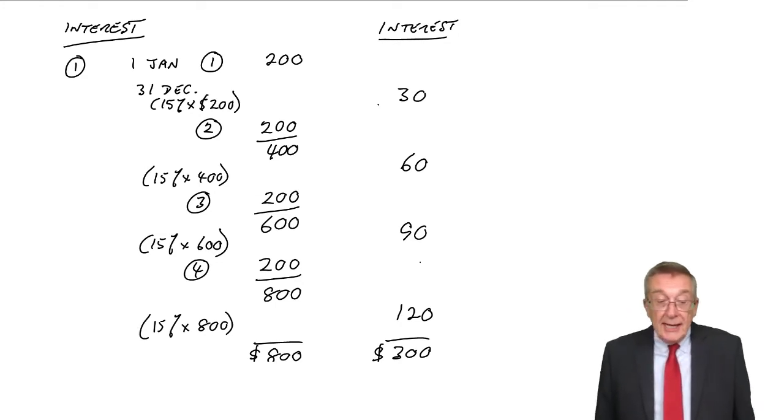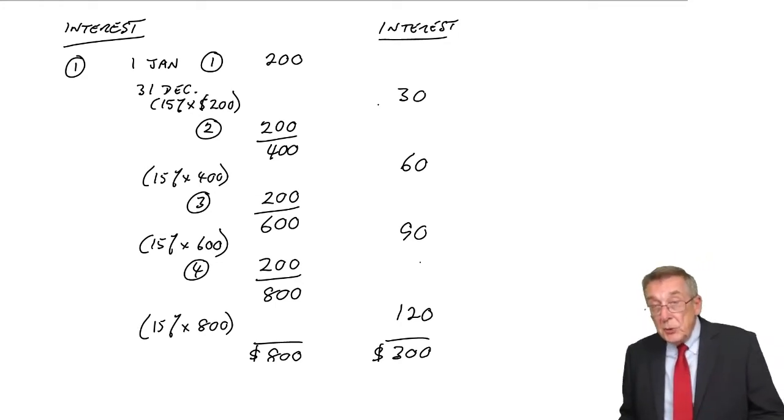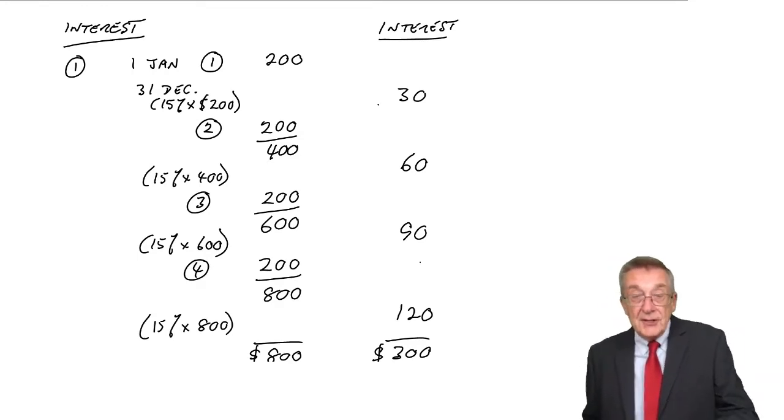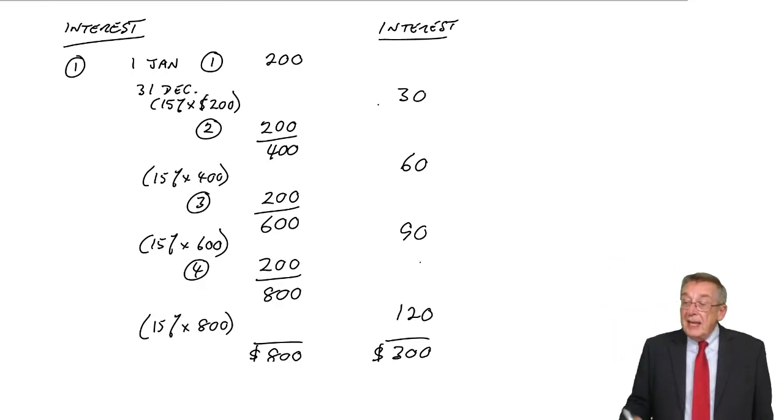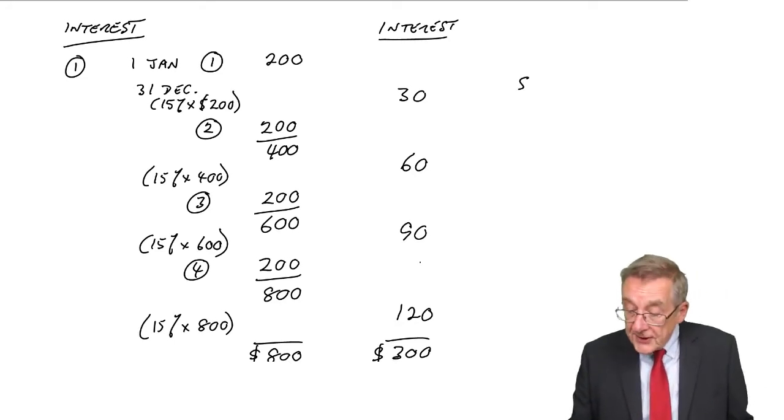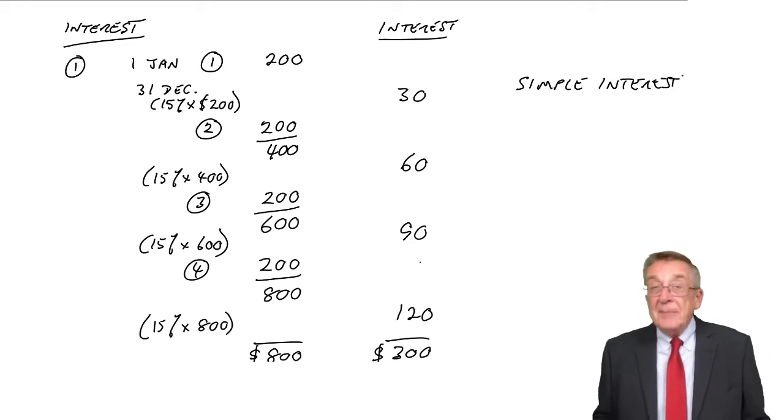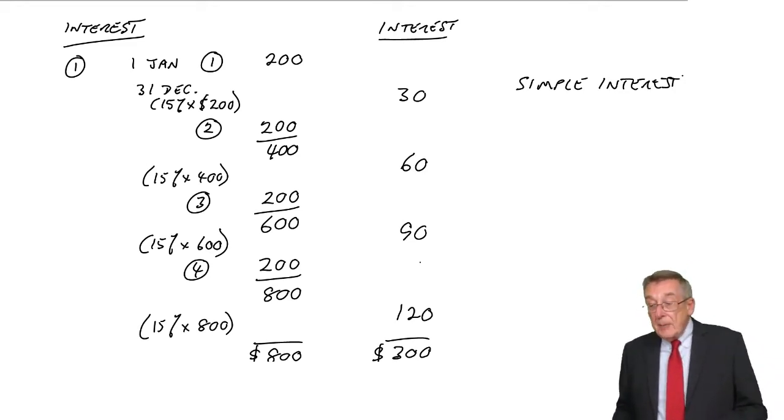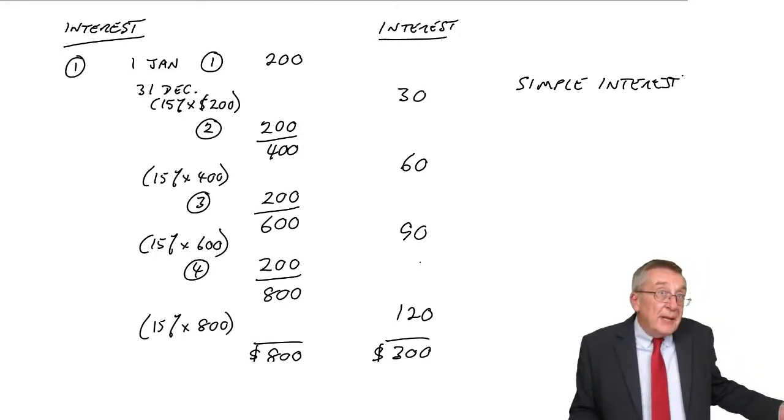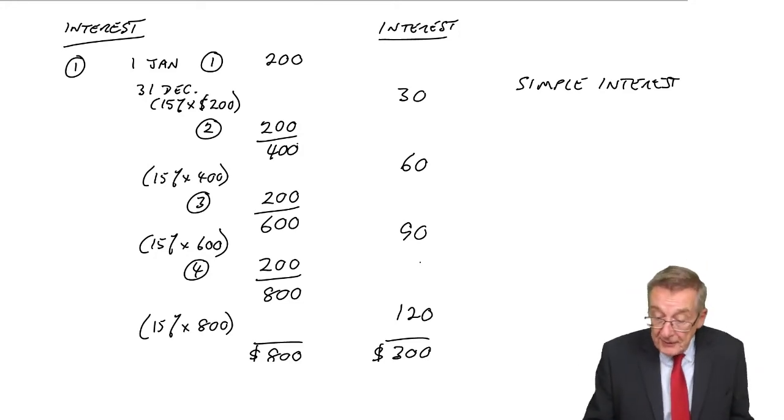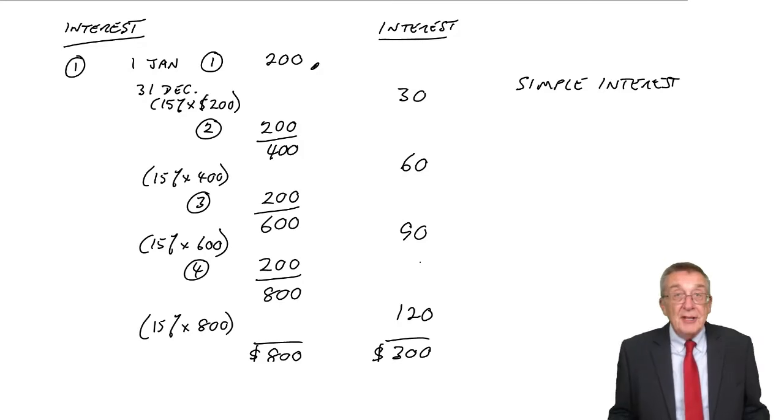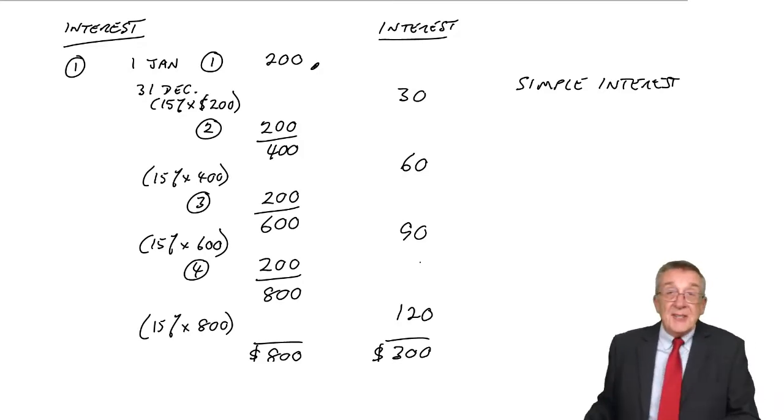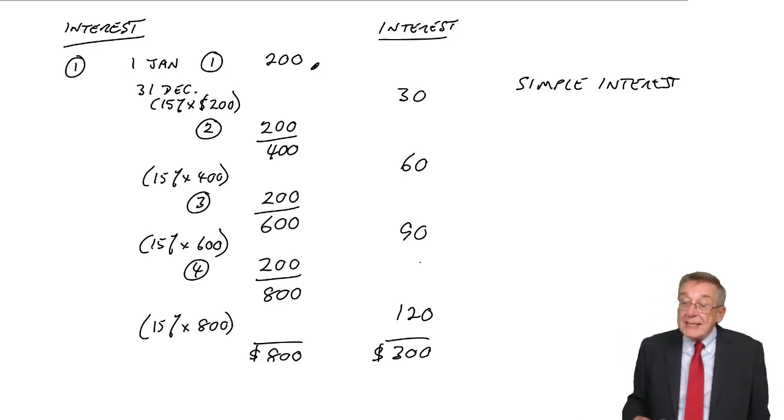And so, usually, well, always in fact, unless we talk different, we assume that the interest gets interest, as I'll show you in a minute. Here, it's what we call simple interest, because it's easy. We're not getting interest on the interest. The bank pays us interest, we either take the money, so we've still only 200 left in the account, or we keep it separate and it doesn't earn any interest. That's simple interest.